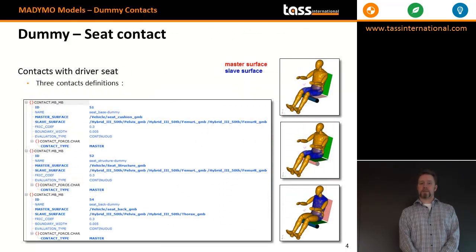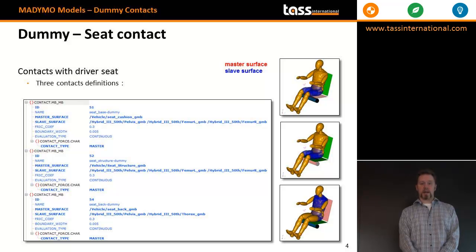Three contacts are defined with the driver seat: between the femurs and pelvis and the lower seat cushion, between the femurs and pelvis and the seat structure — which is effectively an anti-submarining bar — and between the torso and pelvis and the seat back. These are multi-body to multi-body contacts.